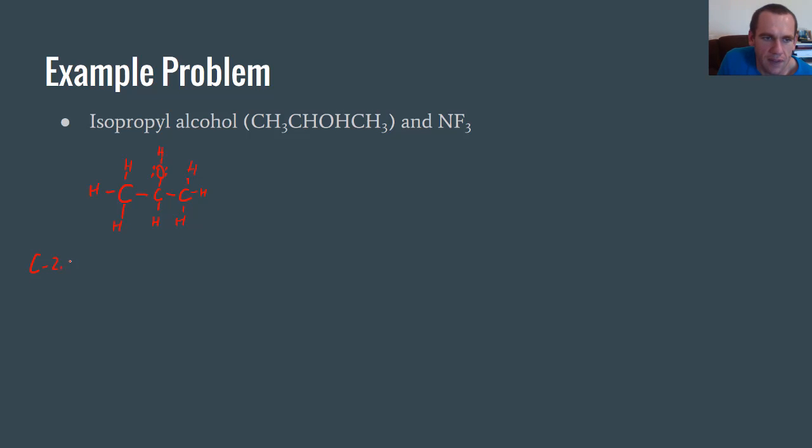Now carbon has an electronegativity of 2.5. Hydrogen has an electronegativity of 2.1. The difference between those is 0.4. That means all of these bonds are nonpolar. But this oxygen carbon hydrogen group, that's a little bit different.